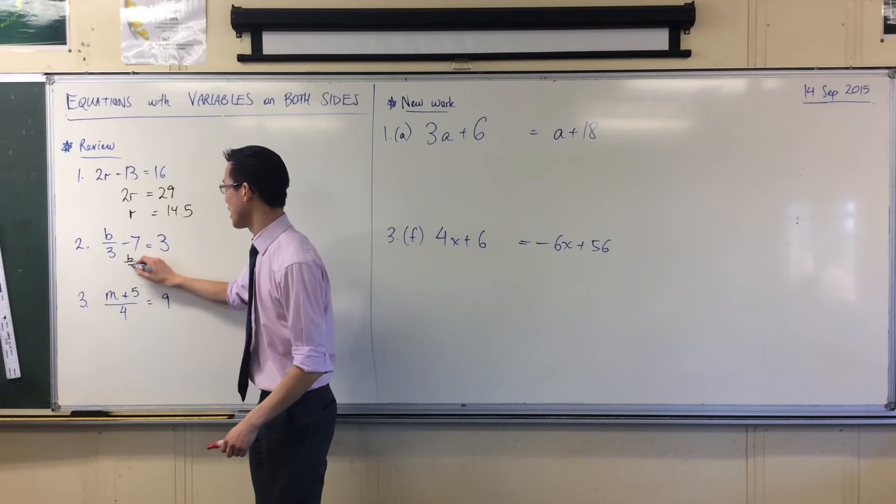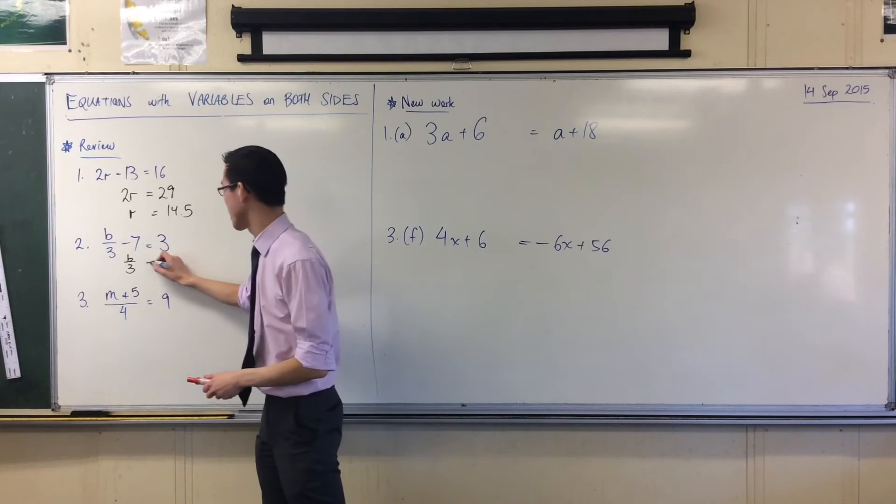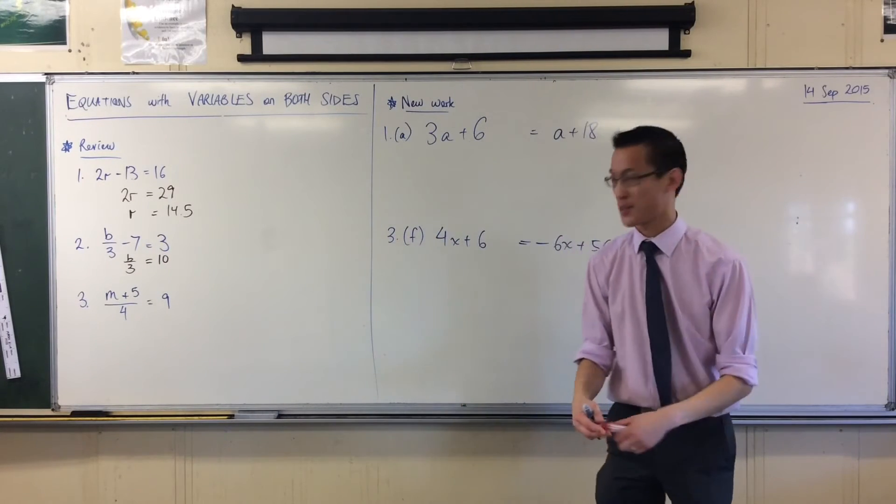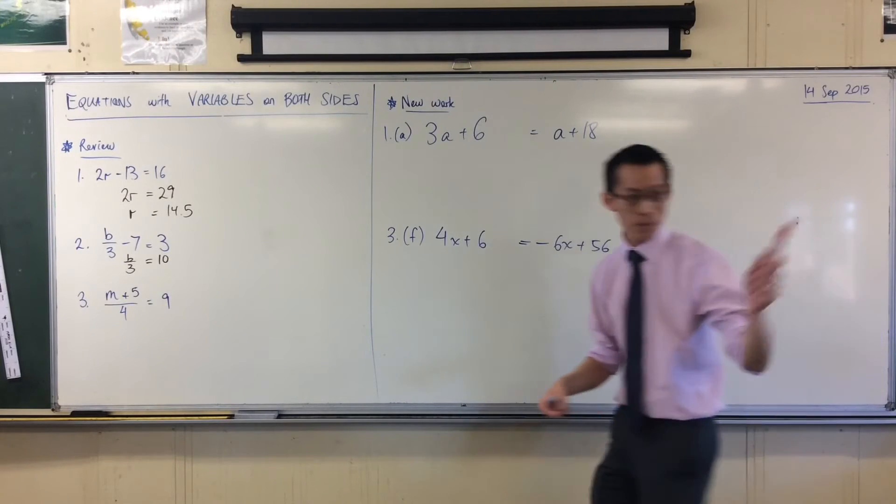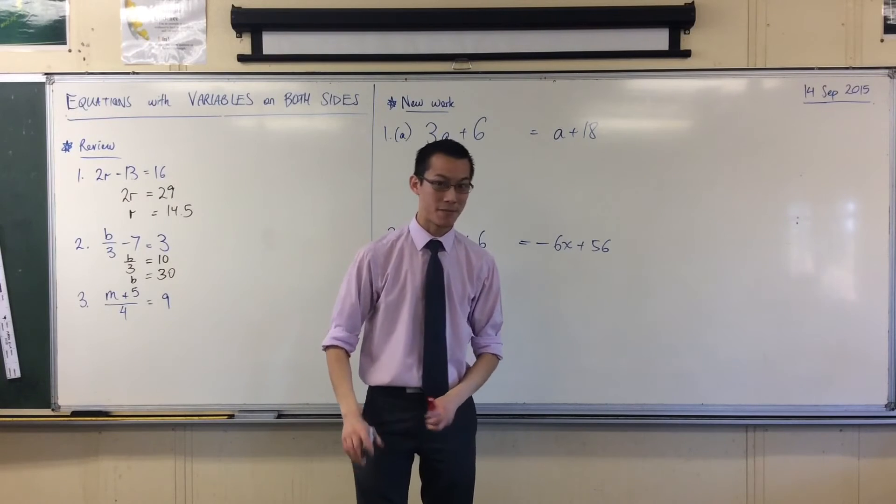So when I do it on the left-hand side, it disappears. What do I get on the right? 10, because 3 plus 7 is 10. And then I just have to get rid of a 3. What am I going to do next? Multiply by 3. So times 3. Very good. So that gives me 30 on the right-hand side.